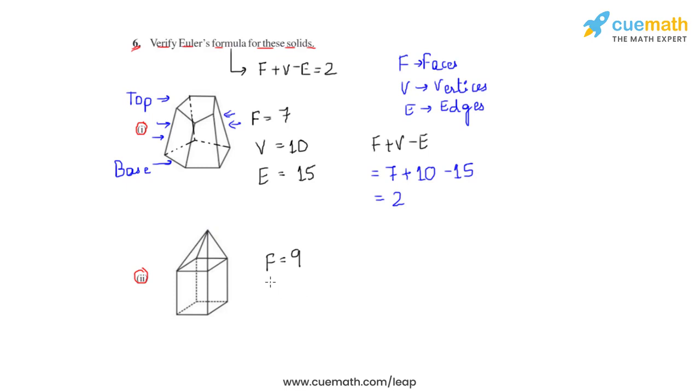Also, the number of vertices, as we see here, are again 9. The number of vertices would be four here, four here, and one at the top, which would make the number of vertices to be 9.